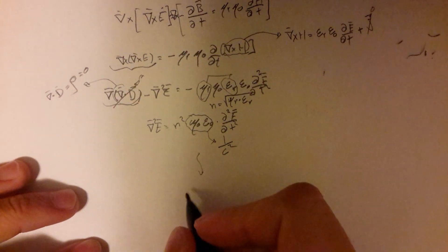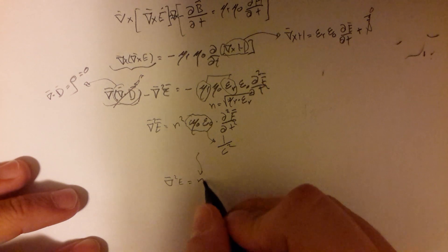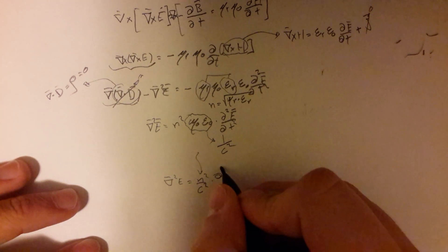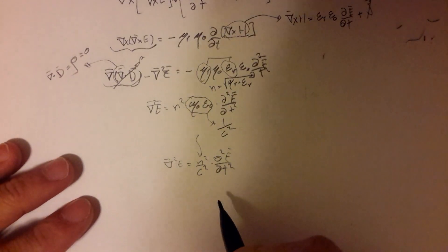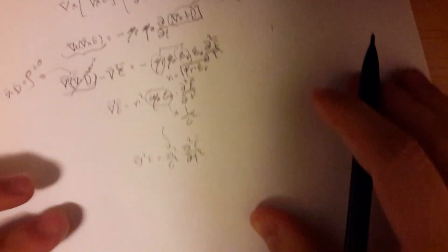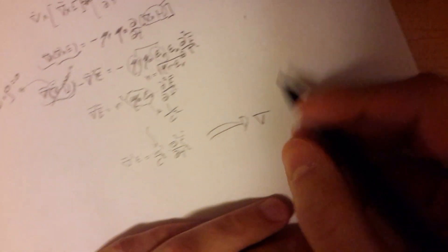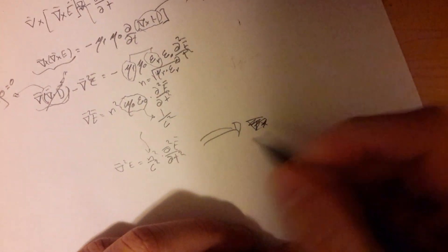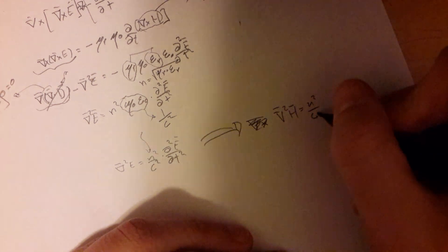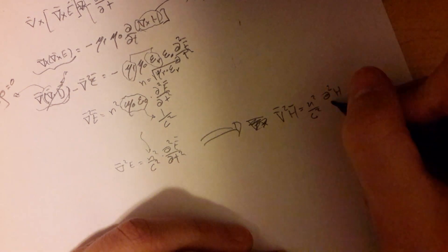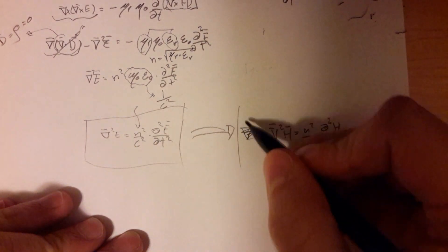So our final equation is the Laplacian of E equals n squared over c squared times the second-order time derivative of E. Using the same process, we can find the equivalent equation for the magnetic field H. So we have both wave equations for the electric and magnetic fields.